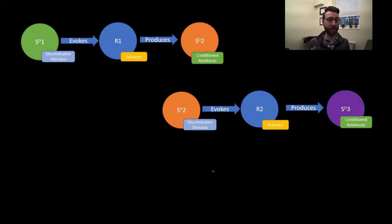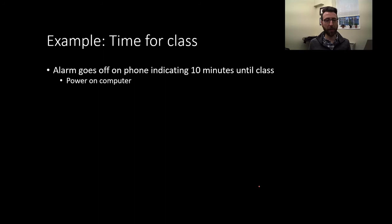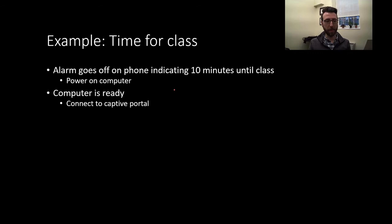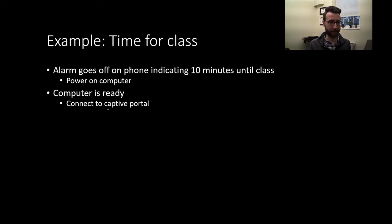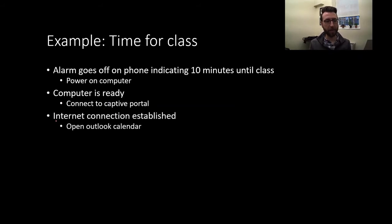Let's put it into the context of an example. An alarm goes off on your phone letting you know you've got 10 minutes until class. That's my discriminative stimulus — an alarm telling me class is soon to be available. So I need to perform my first response, which is powering on the computer. When I power on the computer, it produces a new discriminative stimulus: computer is ready. I've got my desktop screen ready to go — that's my next discriminative stimulus. So now I can perform the next behavior in the chain, which is connecting to the captive portal to get on the Wi-Fi. I get a screen that tells me my internet connection is established — that's my third discriminative stimulus.